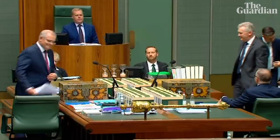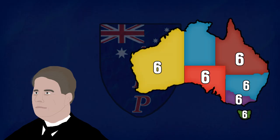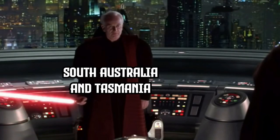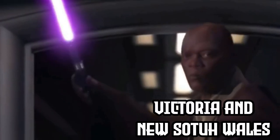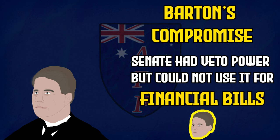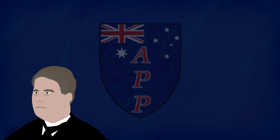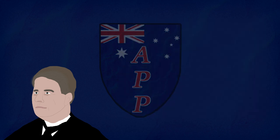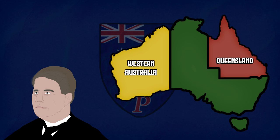The House of Reps is voted according to electorates determined by population, while the Senate is elected according to each state receiving an allocation. As South Australia and Tasmania had fewer people than New South Wales and Victoria, a powerful Senate would suit them. But for Victoria and New South Wales, this was completely undemocratic and totally unacceptable. Barton proposed that the Senate could have veto power, but not on financial bills. Federation was to go ahead, with each colony holding a referendum. Even if Western Australia and Queensland didn't vote yes, the southeastern colonies knew they could form their own union regardless.